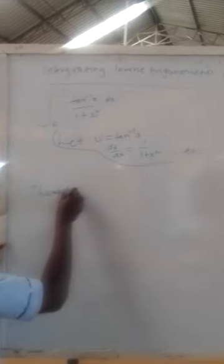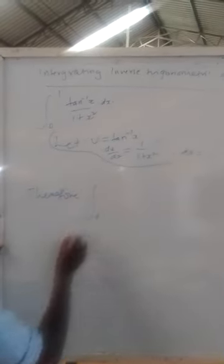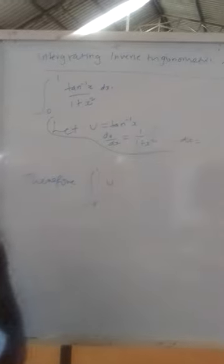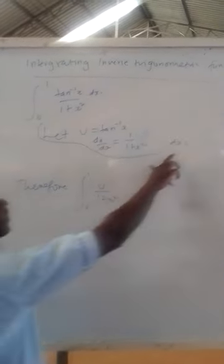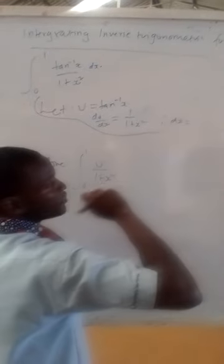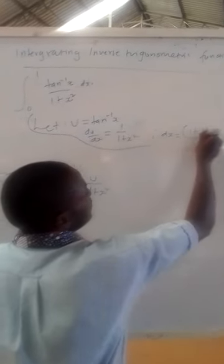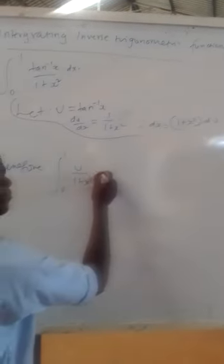Therefore, we have 1 plus x squared, and dx is given by 1 plus x squared du.